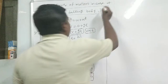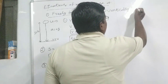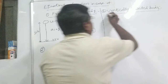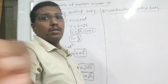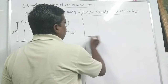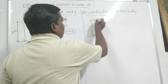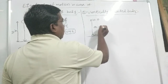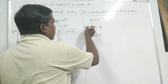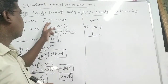Next we discuss about the vertically projected body. For a vertically projected body, the object is thrown upward with initial velocity U, its final velocity V becomes 0 at maximum height, the acceleration is −g (negative g), and the maximum height travelled is H. We now write the equations of motion for this case.